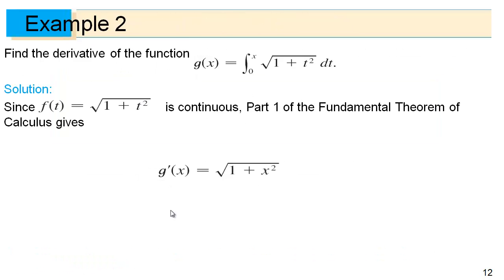So with that in mind, let's find the derivative of this function: g is defined as the integral from 0 to x of the square root of 1 plus t squared dt. Since that is a continuous function, the Fundamental Theorem of Calculus holds, and therefore if we take the derivative of g we just get back to that original function — the square root of 1 plus x squared — the same function now just in terms of x.